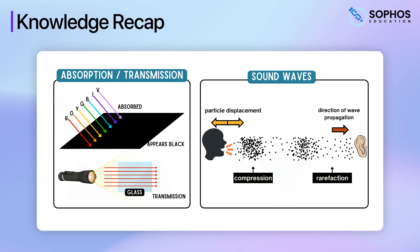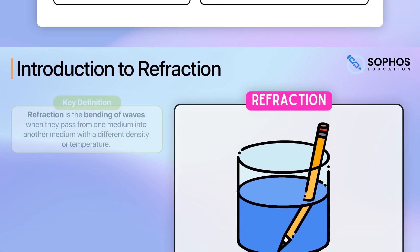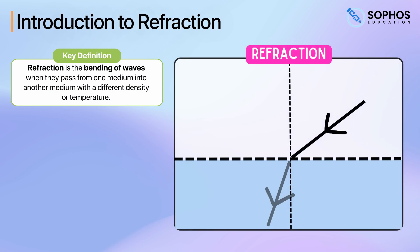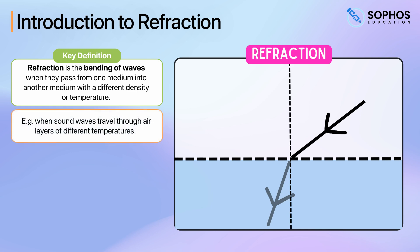Let's get started. Refraction is the bending of waves when they pass from one medium into another medium with a different density or temperature. In terms of sound waves, a typical example of refraction occurs when sound waves travel through air layers of different temperatures.